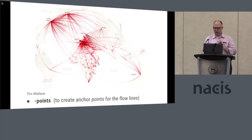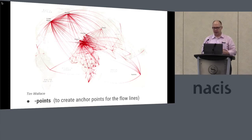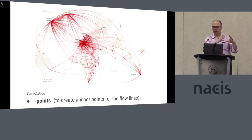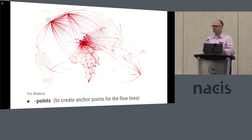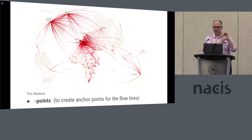This map is by my colleague Tim Wallace — it's a flow map showing refugee movements. For this, he used MapShaper's points command, which has the ability to locate the thickest part of each polygon. That's often a good place to use as an anchor for symbols or labels. If you just use the centroid, when polygons are irregular — as most of you know — that often doesn't make a good anchor point.